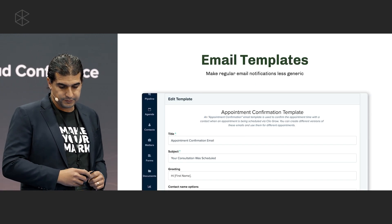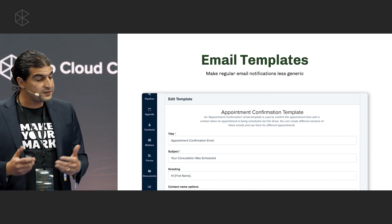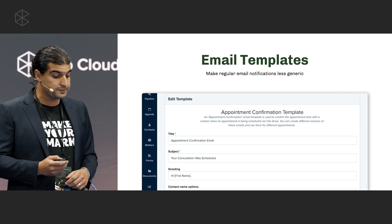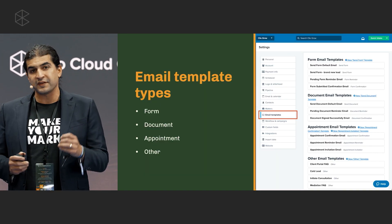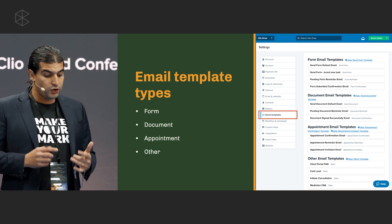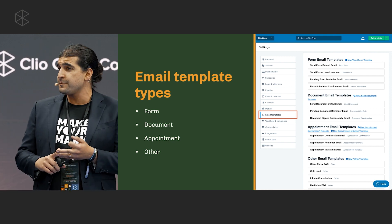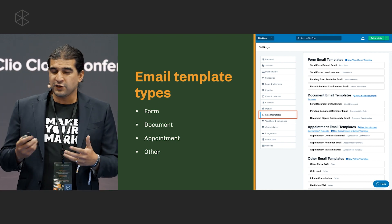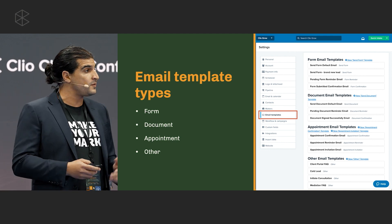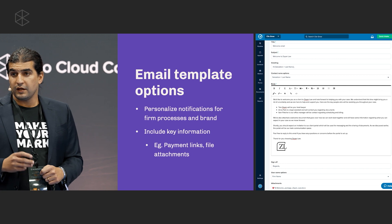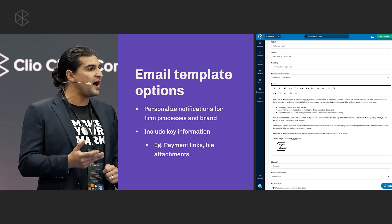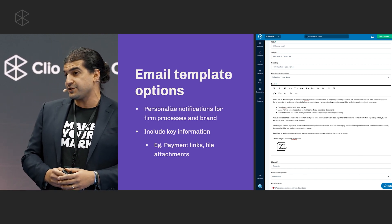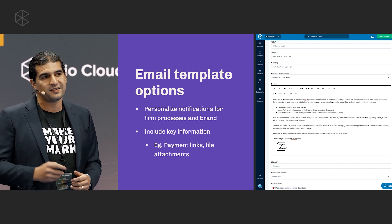The second template type we want to cover is email templates. These allow you to program different templates that you can send out from Cleo Grow. We have templates oriented around key workflow options — you can create templates based on forms, documents, appointments, or just generic emails. You can use these to nurture a cold lead, send an FAQ, or anything you find yourself sending often. You have similar customization options as the text editor: control formatting, add images, add different colors.